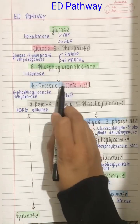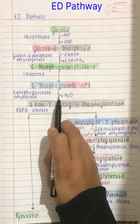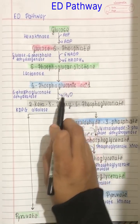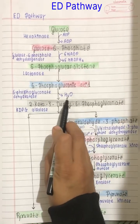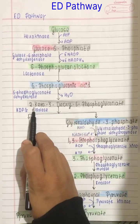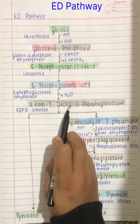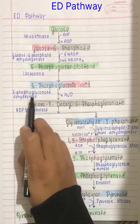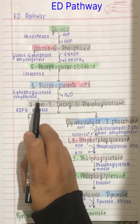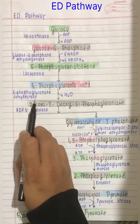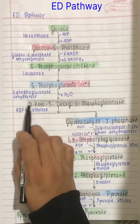After that, 6-phosphogluconolactone is converted into 6-phosphogluconic acid with the help of lactonase enzyme. Then 6-phosphogluconic acid is converted into 2-keto-3-deoxy-6-phosphogluconate (KDPG) with the help of 6-phosphogluconate dehydratase. The key intermediate in this pathway is KDPG, and this enzyme is centrally involved.